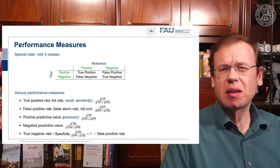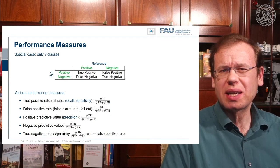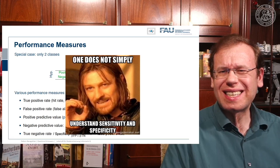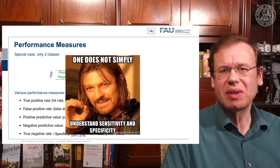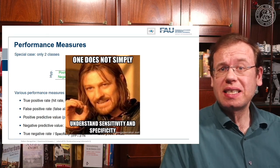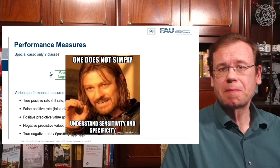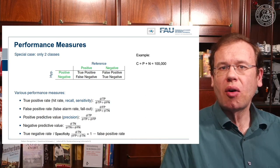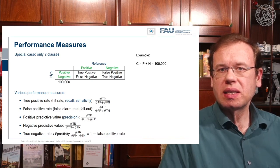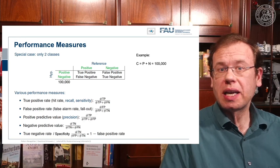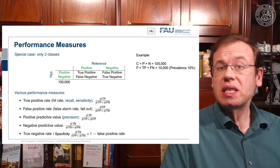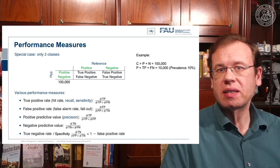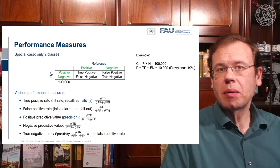This all seems a little complex, so I'm trying to break things down. As they say, one does not simply understand sensitivity and specificity — but I tried to make this easier with examples. Let's assume we have a total of 100,000 people. We will now populate the entire confusion table with these 100,000 examples. We know that 10,000 are actually infected with the zombie disease.